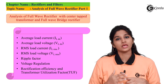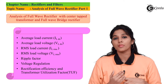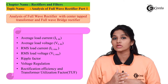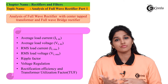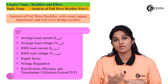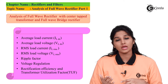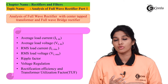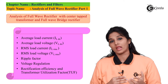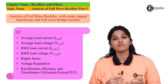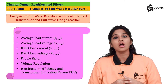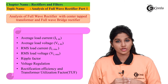Moving to the next parameter — RMS load voltage, that is VRMS or VLRMS. VLRMS equals VM divided by square root of 2. These are the four parameters that can be used for analysis of full wave rectifier, whether it is a center tap transformer rectifier or a full wave bridge rectifier.